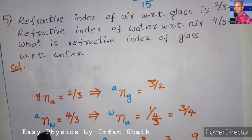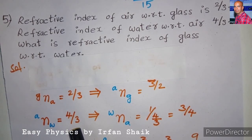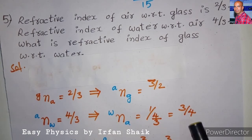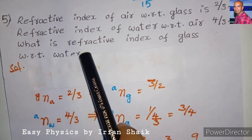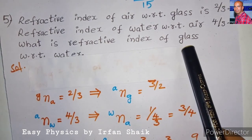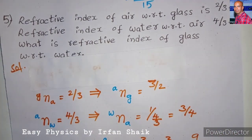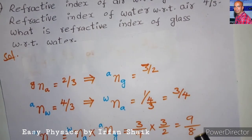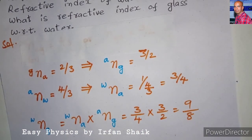The refractive index of water with respect to air is 4/3. To find the refractive index of air with respect to water, we take the reciprocal of 4/3, giving 3/4. To find the refractive index of glass with respect to water, we multiply these two values: 3/2 × 3/4 = 9/8.